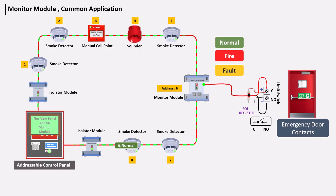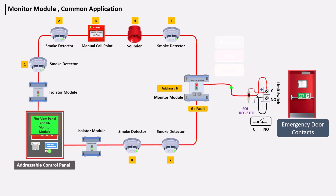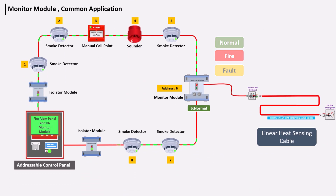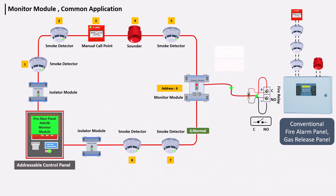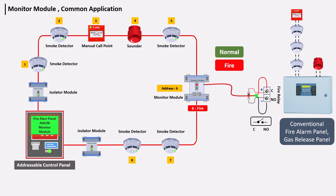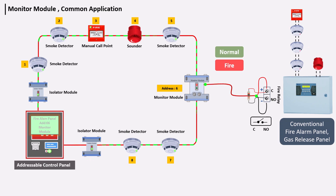For emergency door contacts, if an emergency door is opened and we need an alert or indication on the fire alarm panel, we use the monitor module. For LSS cable (linear heat sensor cable), we can connect it with an addressable fire alarm panel using the monitor module; sometimes an LSS controller is also used, and its relay output is connected to the monitor module. For integration with conventional fire alarm panels, gas release panels, and waste systems — when we need the fire signal of a conventional or gas release panel in an addressable fire panel, we connect it via relay contact to the monitor module.